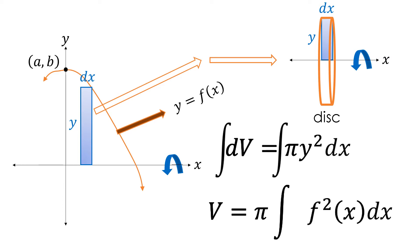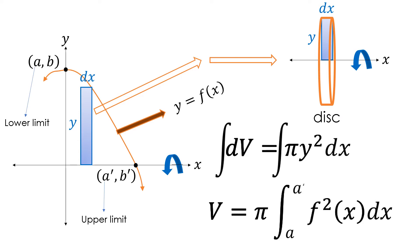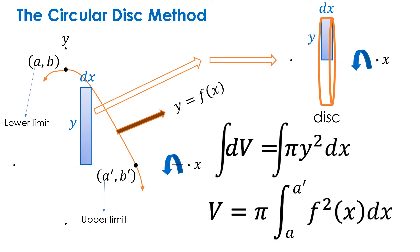If we consider the first point of intersection from the figure at (a, b), then a is the x-coordinate and is the lower limit of the integral. If we consider the second point of intersection at (a', b'), then a' is the x-coordinate and is the upper limit of the integral. Remember that a circular disk is formed if the element is perpendicular and at the same time touches the axis of revolution. This method is called the circular disk method.